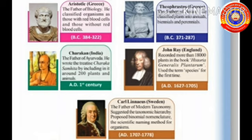Annuals are plants that complete their life cycle within one growing season. Biennial plants take two years to complete their life cycle. Perennial plants are those that live more than two years. Charaka is from India. He is known as the father of Ayurveda.